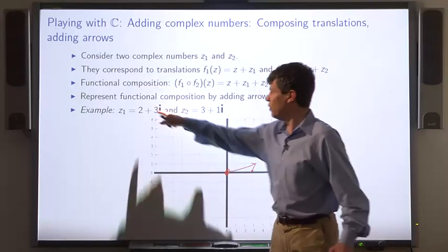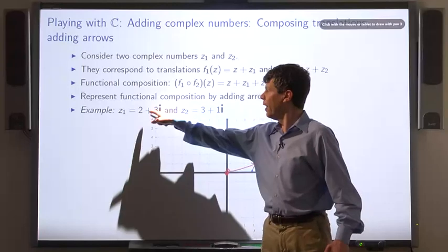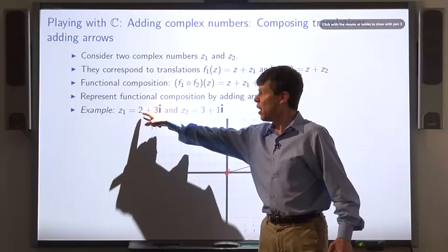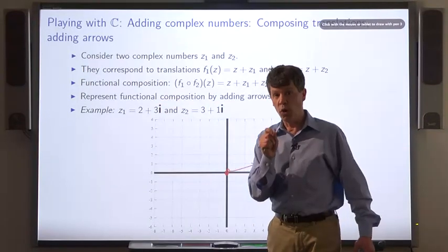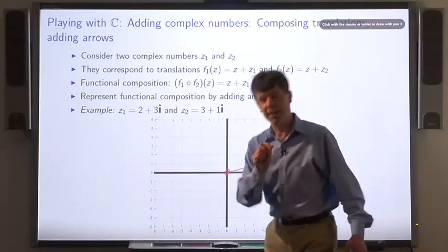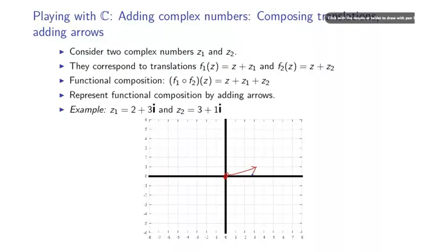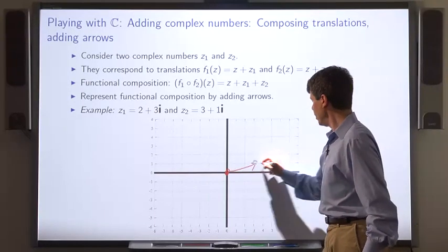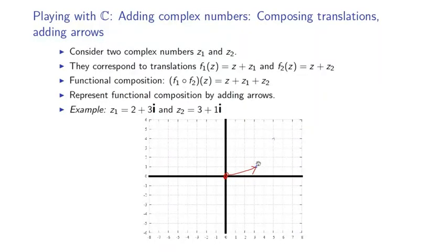Next, we'll write down the arrow representing this complex number. This complex number says move two units to the right and three units up. And we can write it as an arrow with the tail located anywhere. And a convenient place to put the tail is at the head of the last arrow. So we're going to put it right here. Here's the tail. The head will be two units to the right and three units up. So this arrow is represented, this complex number is represented by this arrow.